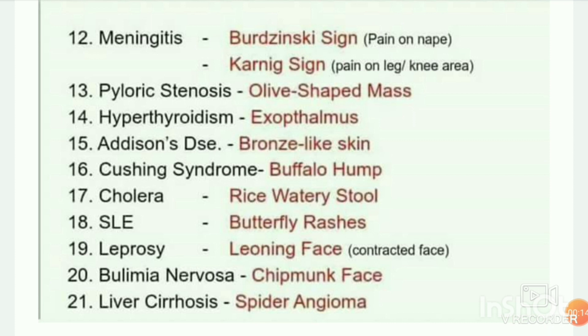Pyloric stenosis — olive-shaped mass. Hyperthyroidism — exophthalmos. Addison's disease — bronze-like skin. Cushing syndrome — buffalo hump. Cholera — rice-watery stool.